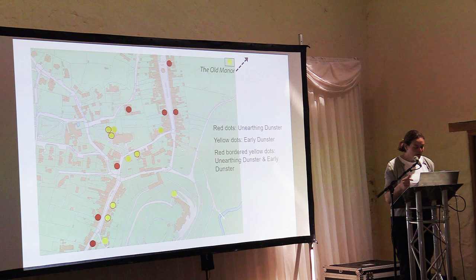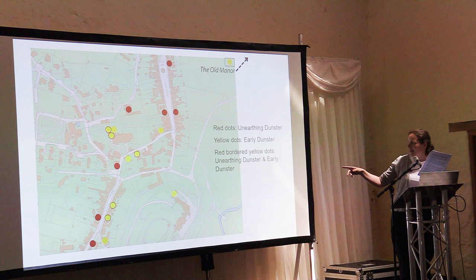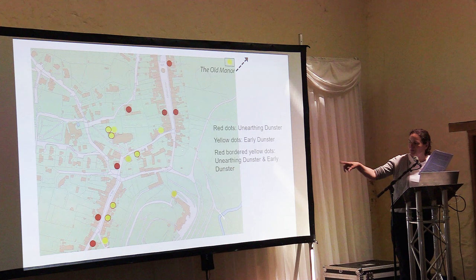It's for this reason that during the Early Dunster project it was considered appropriate to carry out more extensive sampling on several of the buildings previously analysed. On the map, red dots are ones previously sampled, yellow dots are ones sampled for this programme, and the yellow ones with red outline have been sampled by both.